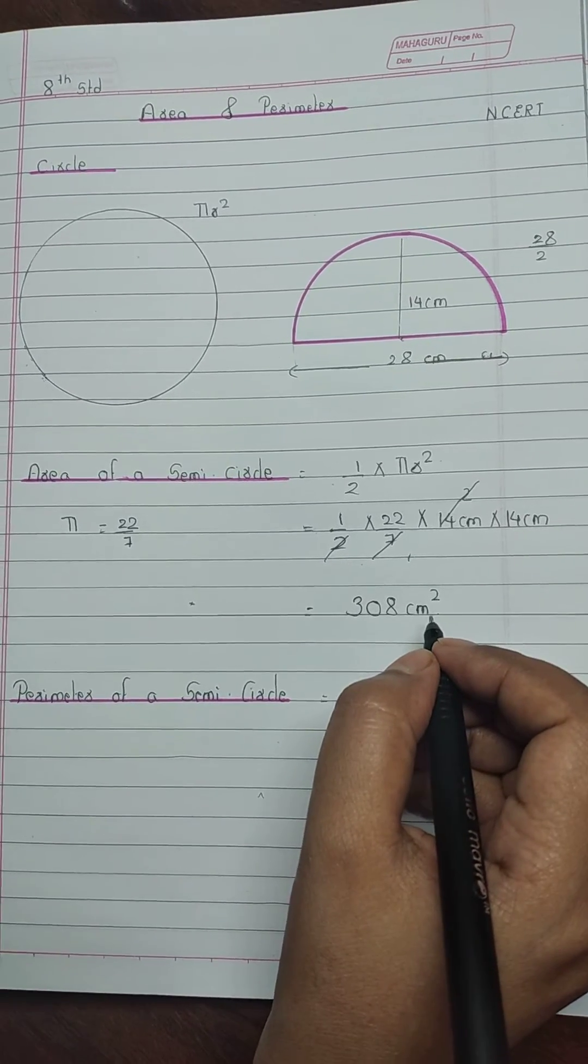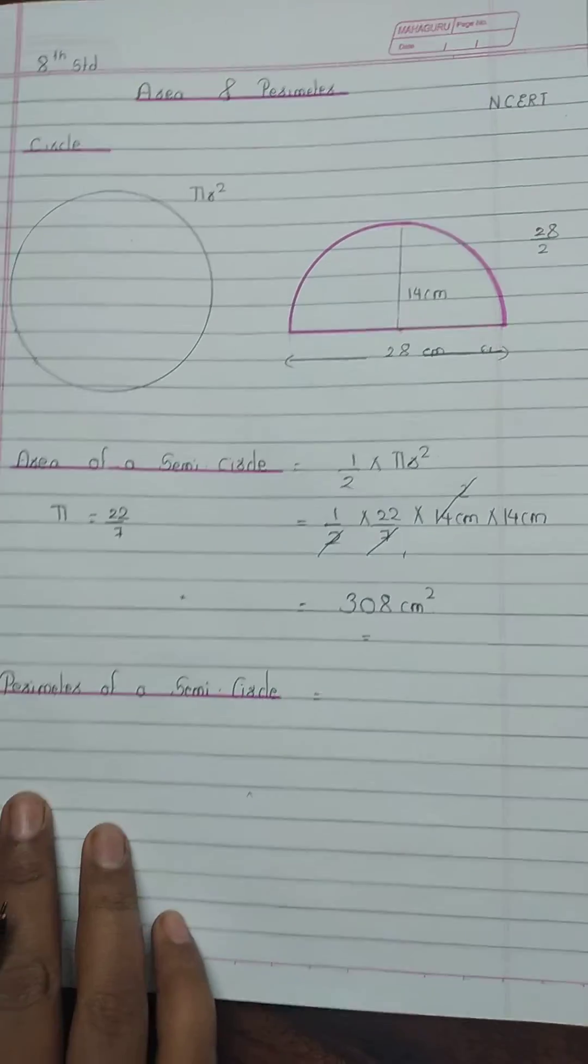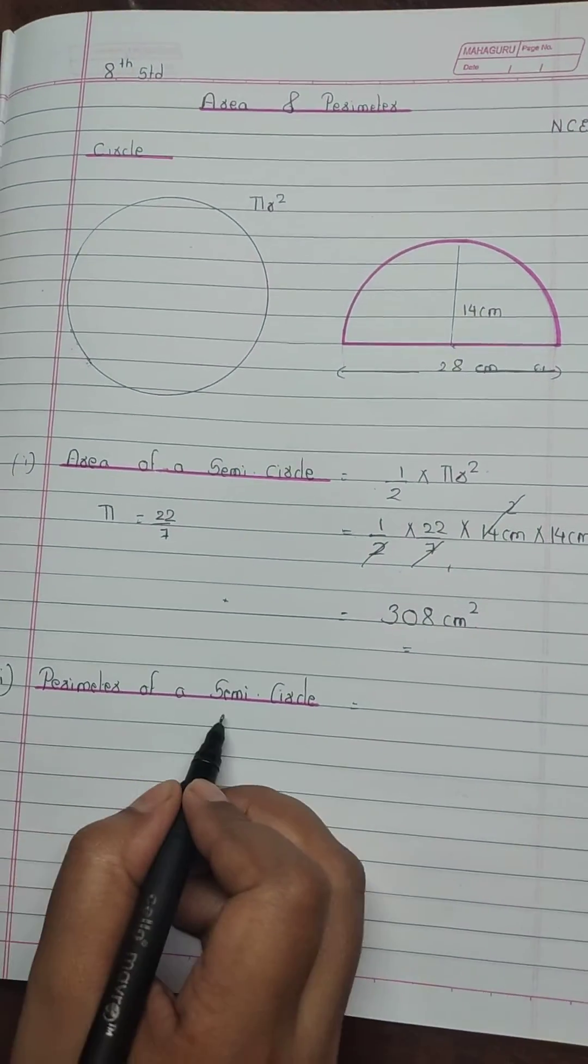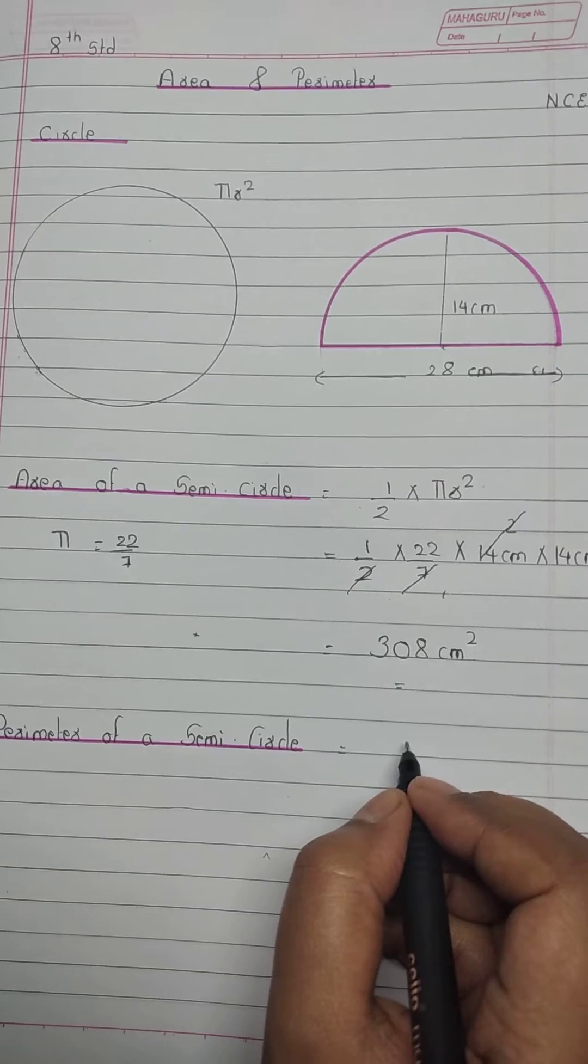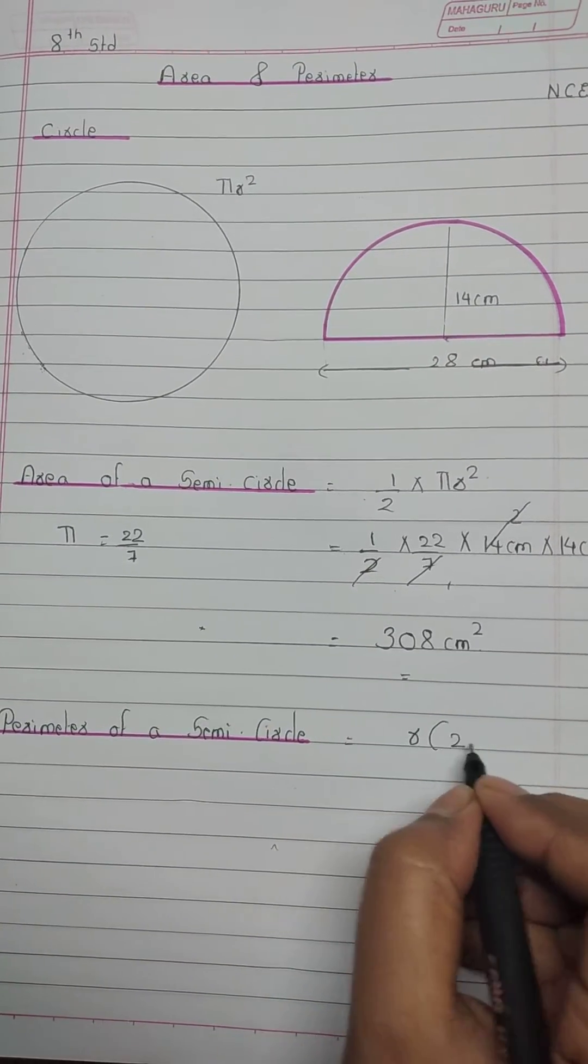Now, perimeter of a semicircle. The formula is r times 2 plus pi.